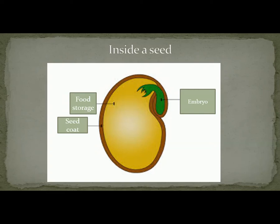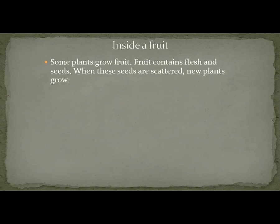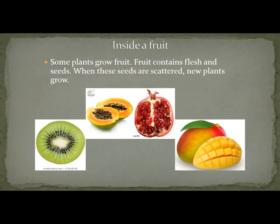Now let's look inside our fruits. All plants grow fruit. Fruit contains flesh and seeds. When these seeds are scattered, new plants grow. When seeds are planted, new plants grow. These are the seeds inside the fruits. Here you can see different types of fruits and the seeds of fruit.